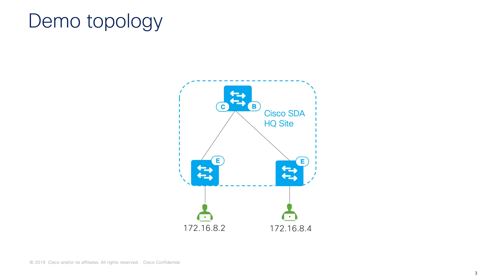Here in this demo topology we have an SD-Access fabric site which is up and running. We have two hosts successfully authenticated in the fabric with IP addresses of 172.16.8.2 and 172.16.8.4. We are doing a packet capture on 8.2 and pinging from 8.4 to the broadcast IP address for this subnet, which is 172.16.8.255, and also the link-local address. We will see what happens with layer 2 flooding enabled and disabled.